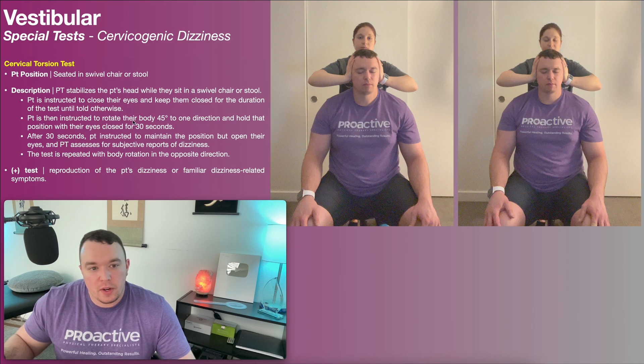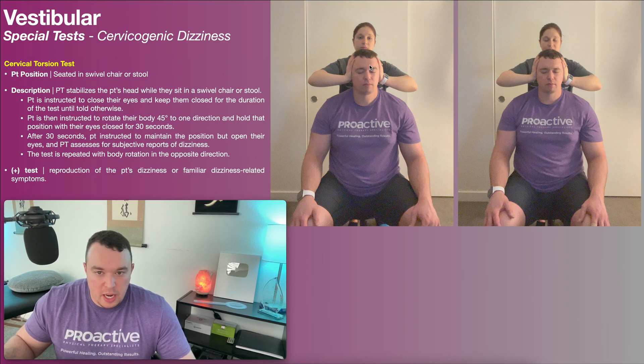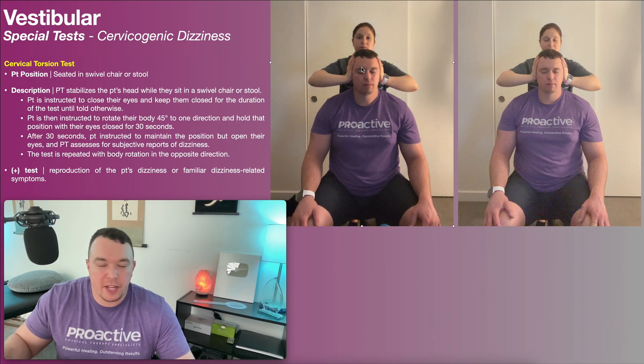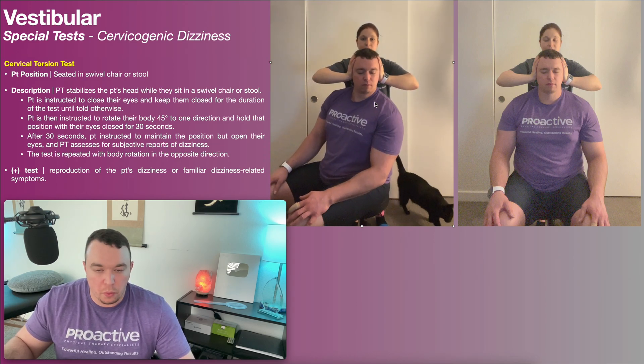The patient is then instructed to close their eyes and keep them closed for the duration of the test. The patient is instructed to rotate their body 45 degrees to one direction and hold that position with their eyes closed for 30 seconds. So my eyes are closed here. The PT is stabilizing my head, and I'm going to use my feet to swivel in the chair to get my body rotated 45 degrees to the right.